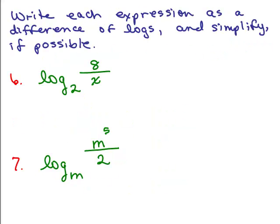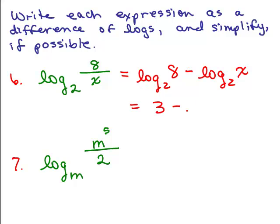Here are two more problems: write each expression as a difference of logs and simplify if possible. For the first one, using the quotient property: log base 2 of the numerator, which is 8, minus log base 2 of the denominator, which is x. Simplifying: log of 8 base 2 equals 3, because 2 to the third power equals 8. So this is equal to 3 minus log base 2 of x.